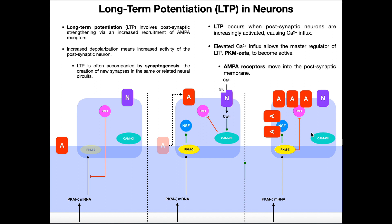The more AMPA receptors you have, the more glutamate sensitivity you have and the more activation you can have of this neuron in the circuit. If you have more receptors for glutamate, you're going to have a cell that's more sensitive and more efficient at transmitting action potentials.